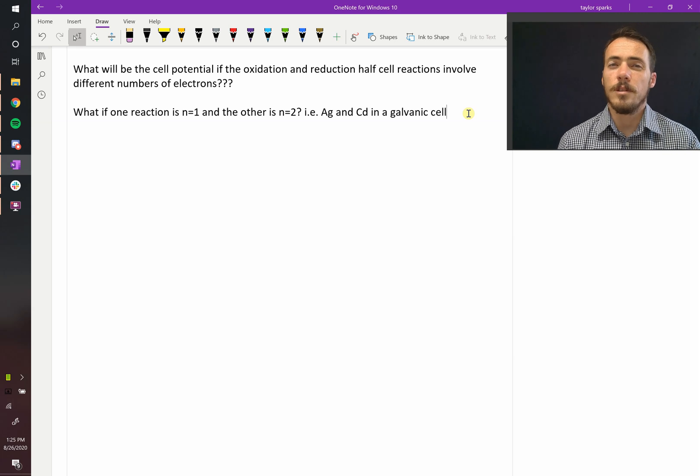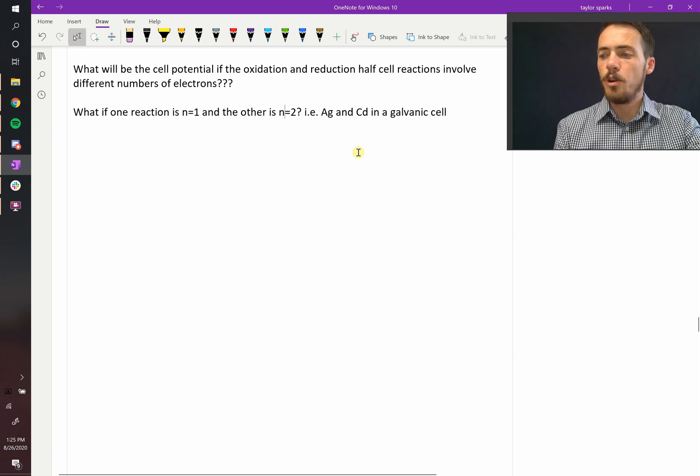Let's say you're trying to calculate the voltage for a reaction, but in this case we want to know the cell potential when the oxidation and reduction half-cell reactions involve different numbers of electrons. Let's consider one has one electron exchange and the other has two. This might be the case for silver and cadmium in a galvanic cell. So how would we go about this?